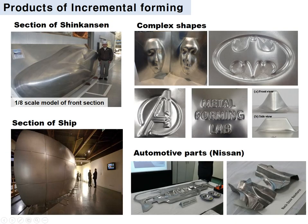Here are some examples of the sheet incremental forming process. The cross-section of the Shinkansen and the ship hull plate were manufactured as prototypes. Other examples include very complex geometries. Since this process does not require a die set, it can manufacture various geometries very easily. Last year, Nissan developed a robot-based incremental forming process to manufacture automotive parts for repair. For flexible manufacturing, the sheet incremental forming process is one of the promising solutions.